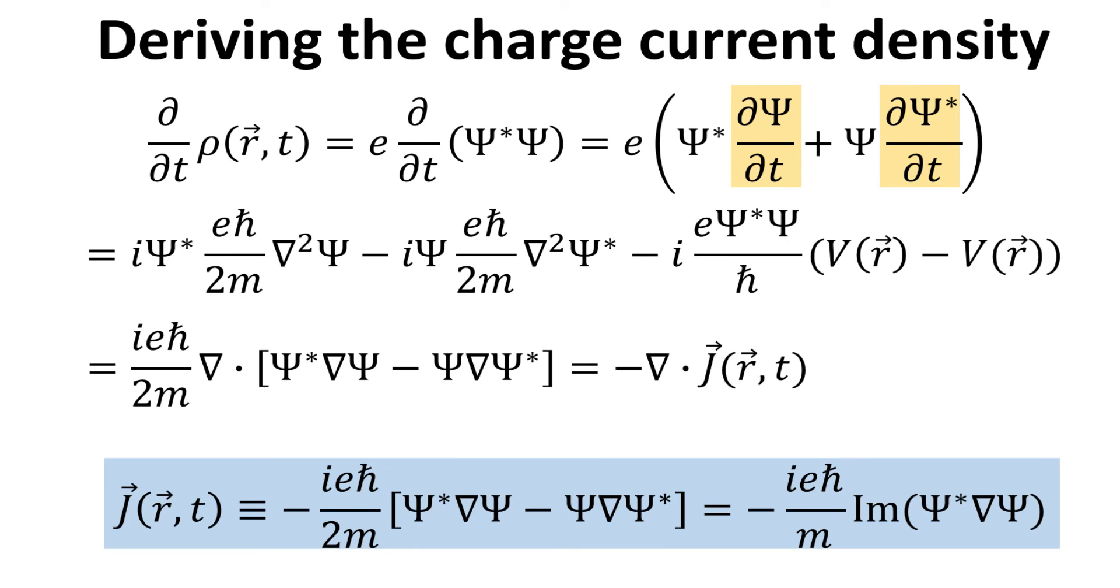Making the comparison between them then allows us to write down an expression for the current density as highlighted in blue. Since the two terms in the square bracket are complex conjugate counterparts, it allows us to just express it in terms of its imaginary part as shown.